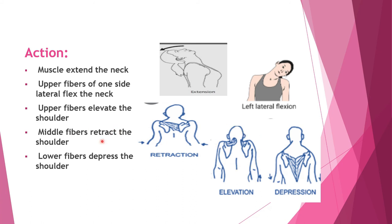The middle fibers retract the shoulder - the middle fibers help with scapula or shoulder retraction. The lower fibers depress the shoulder, like this - it depresses the shoulder.